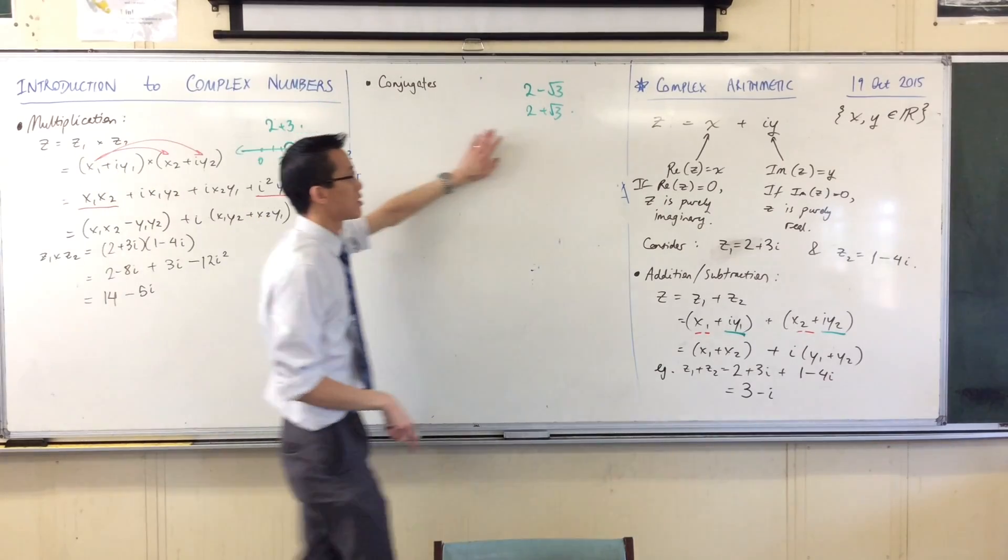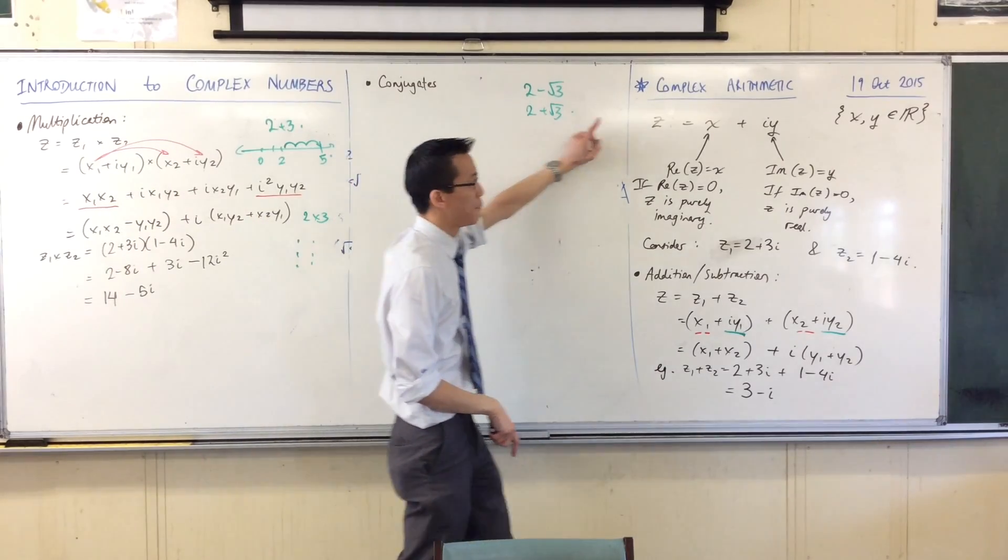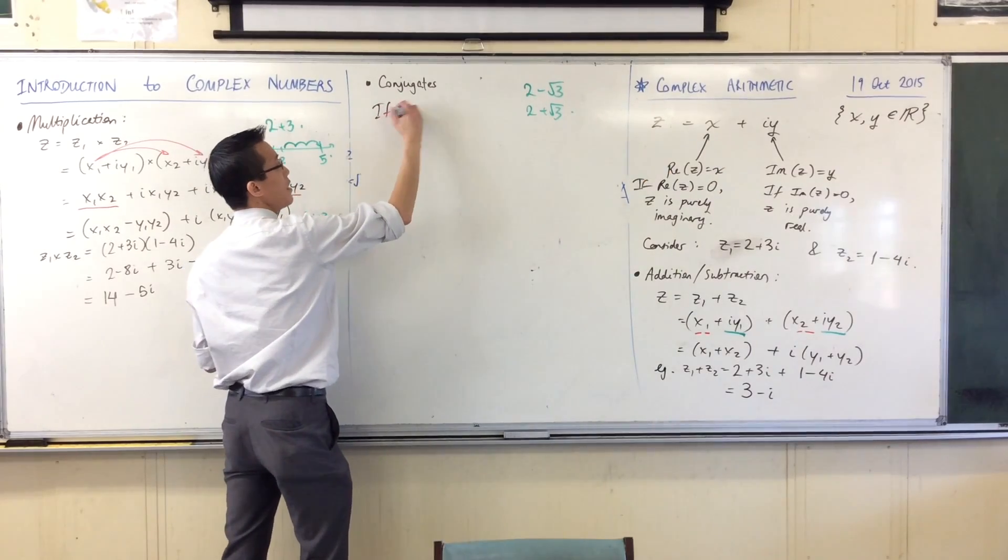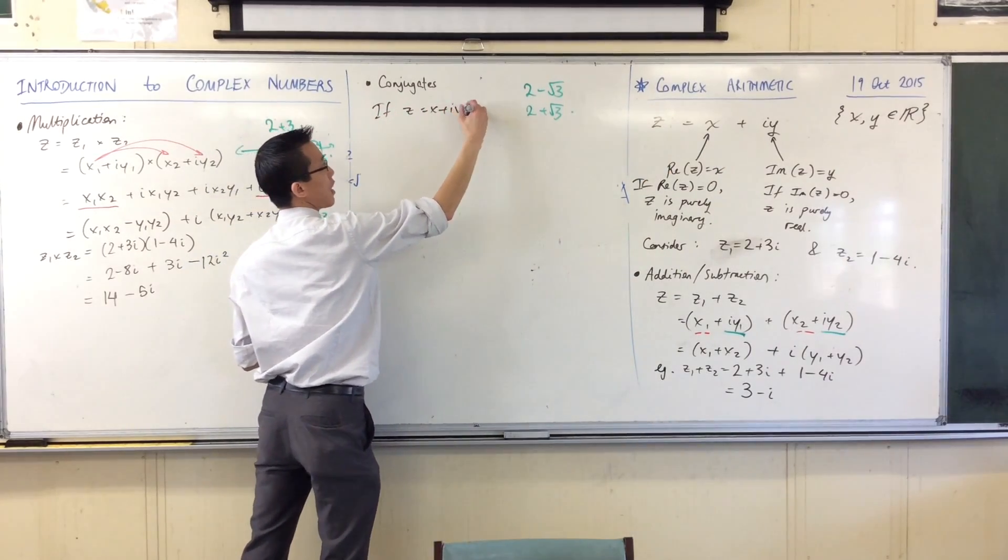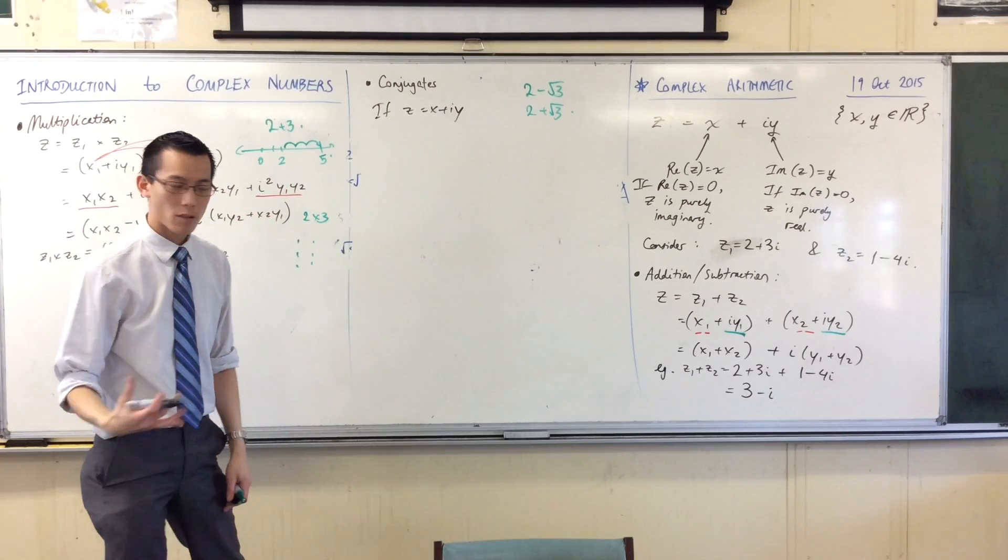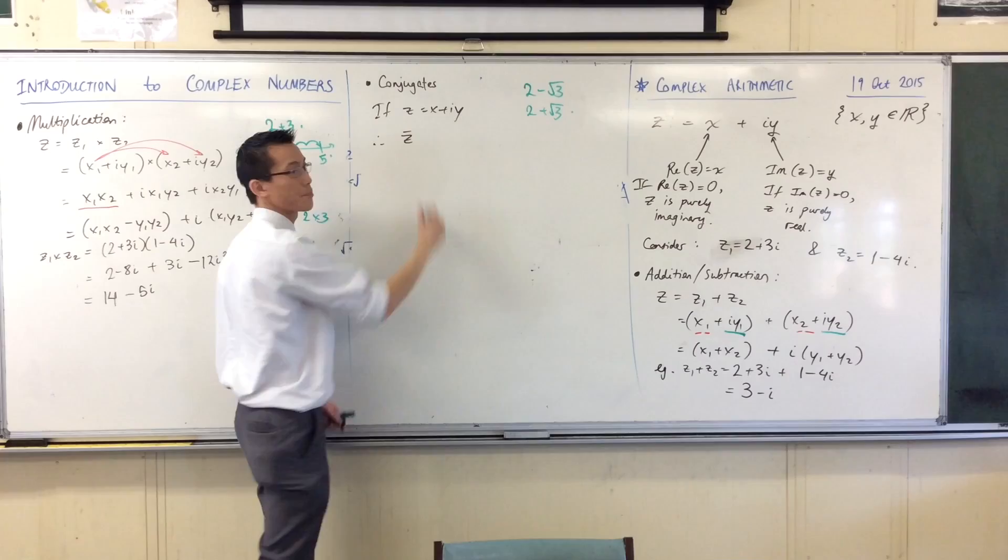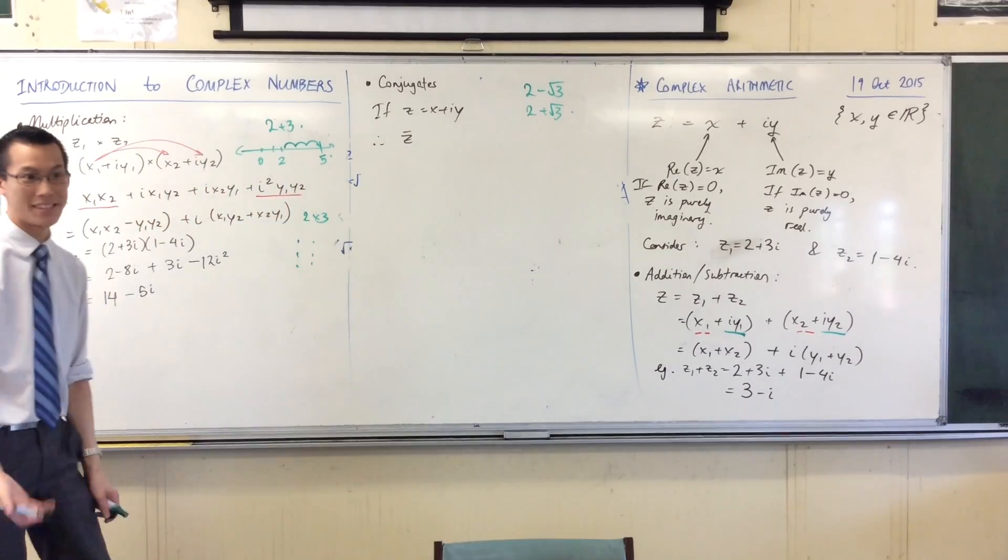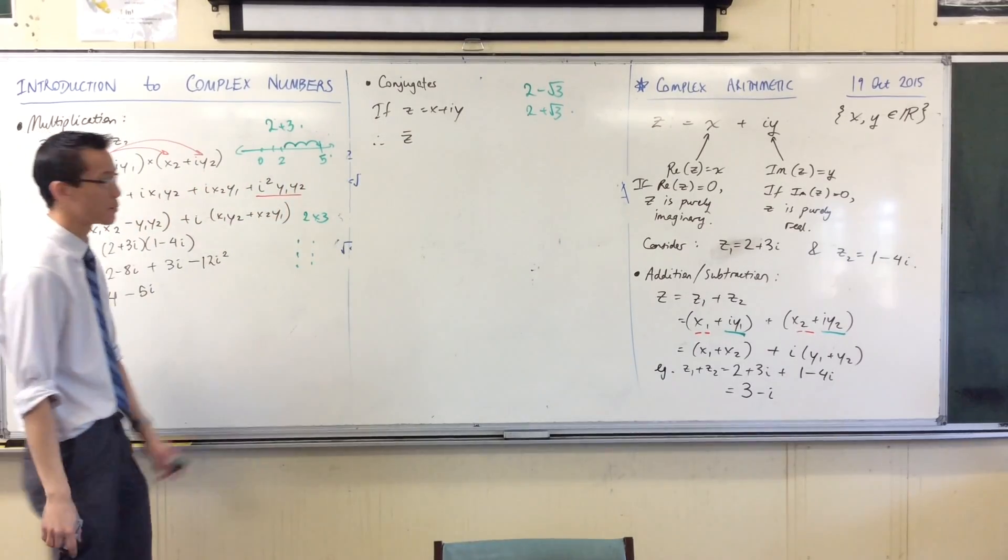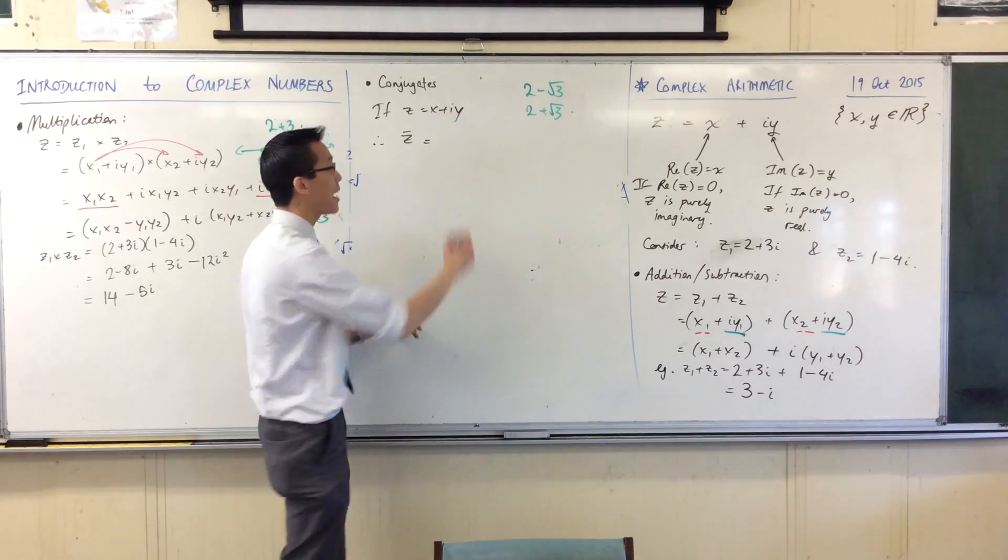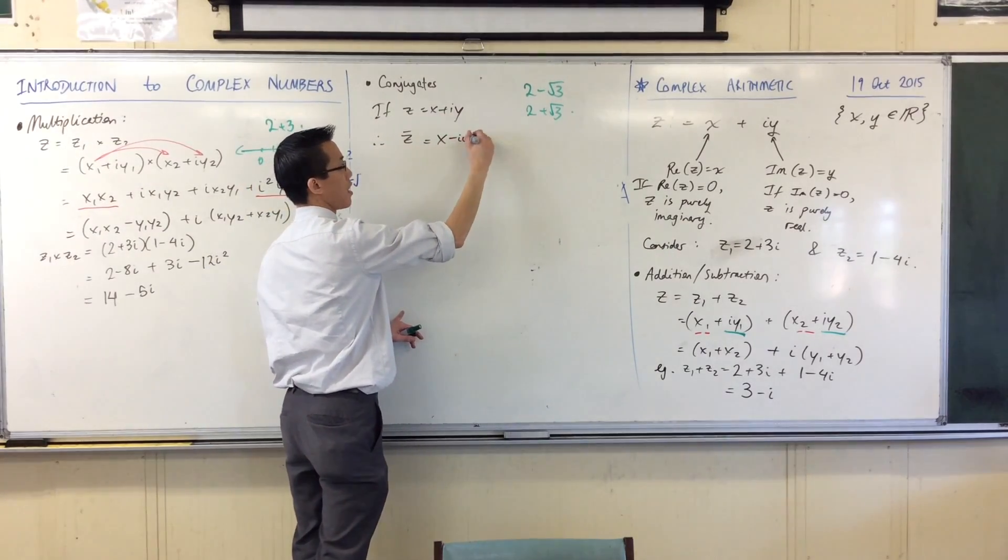What do you think a conjugate means? Not in a surd context, but in a complex context, right? Well, if we've got z equals x plus iy, right, we write the conjugate as z with a bar over the top. In fact, we call that z-bar. z-bar, it's just a bit quicker than saying conjugate. Complex conjugate. z-bar is, you change the plus into a minus. x minus iy.